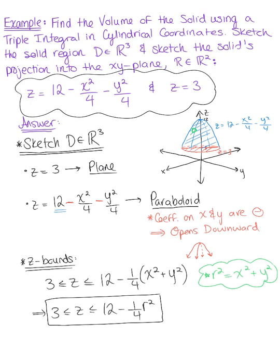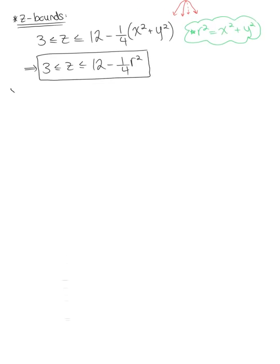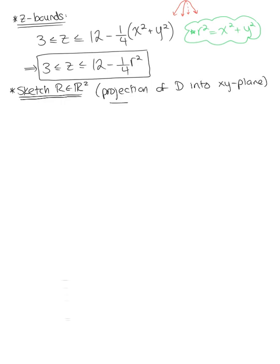The next step is to sketch the projection of this solid region into the xy plane. Using our three-dimensional image, the solid's projection is a shadow cast into the xy plane. Let's sketch R in R2 — this is the projection of D into the xy plane. In the xy plane, z equals 0. To find an accurate two-dimensional region of integration, we equate the two surfaces and simplify, rather than relying on the picture alone.